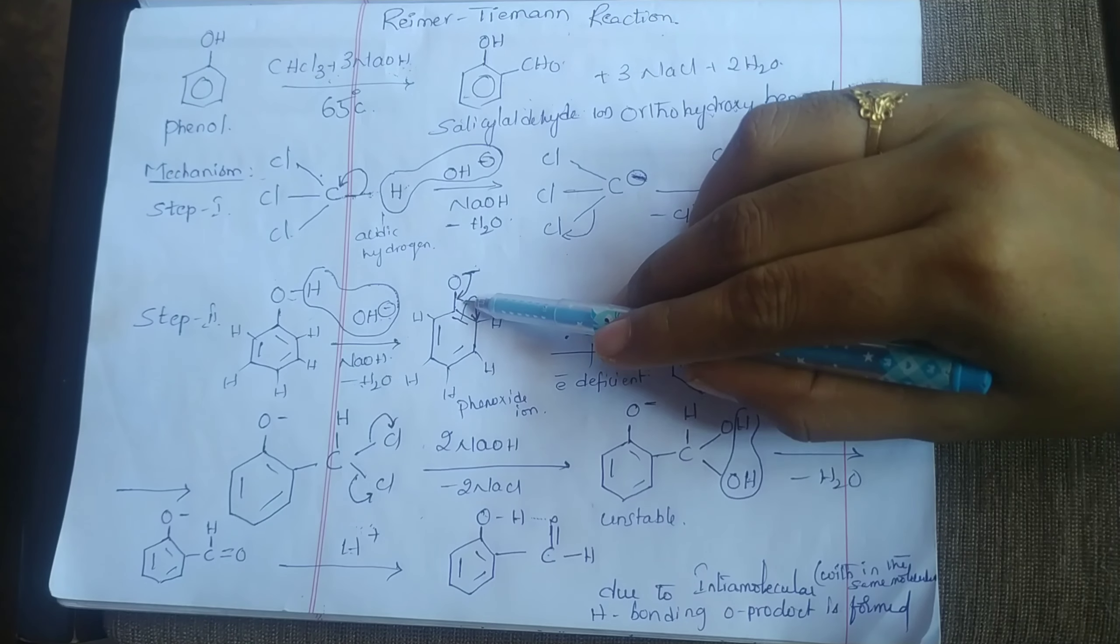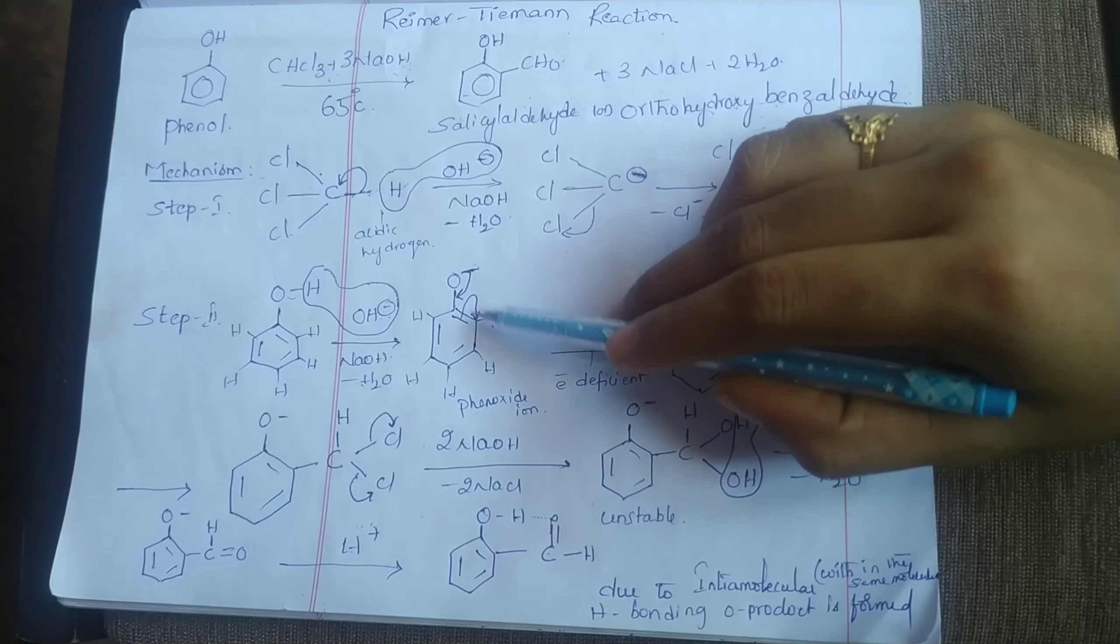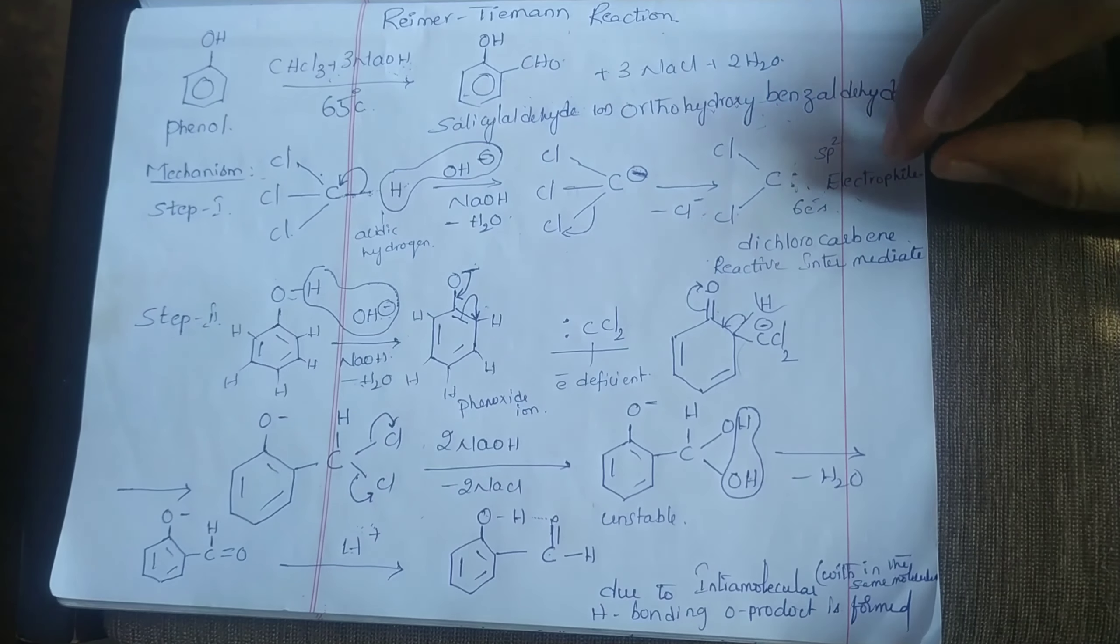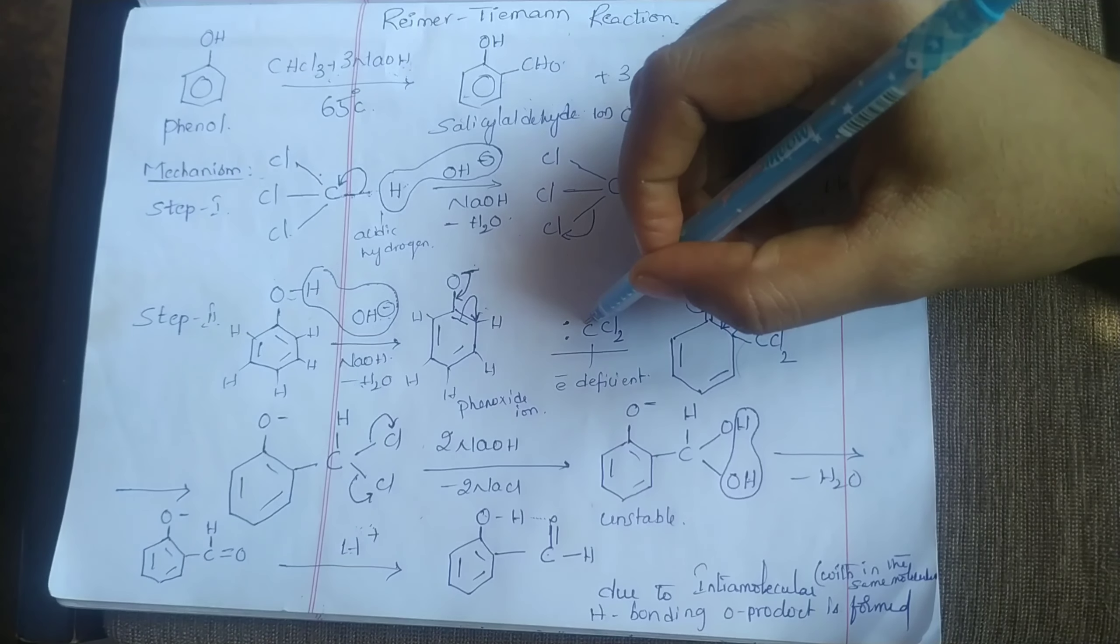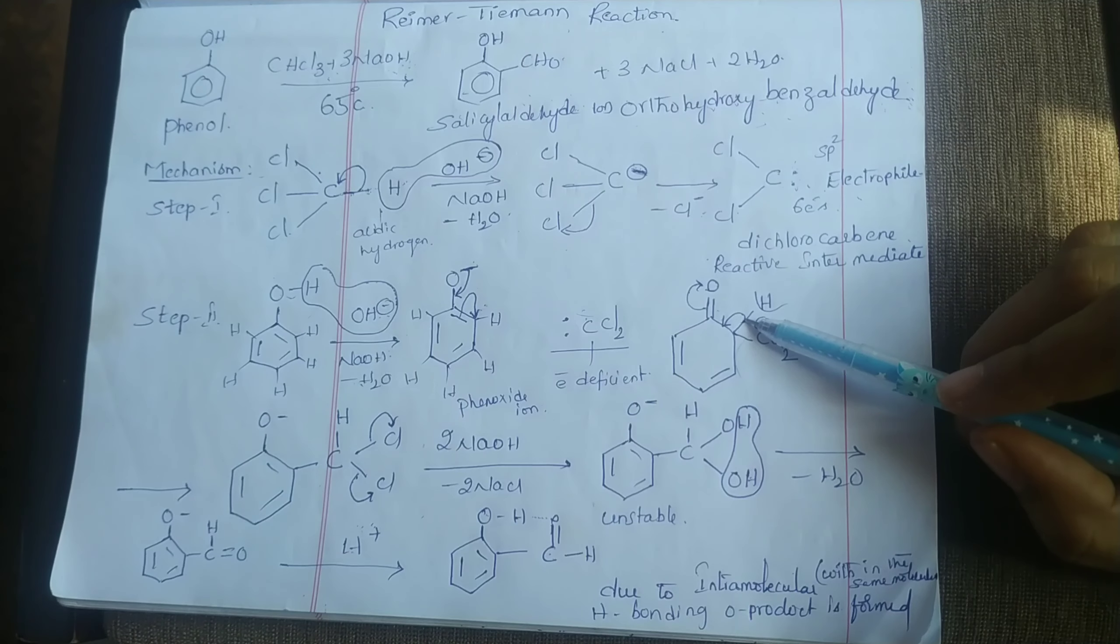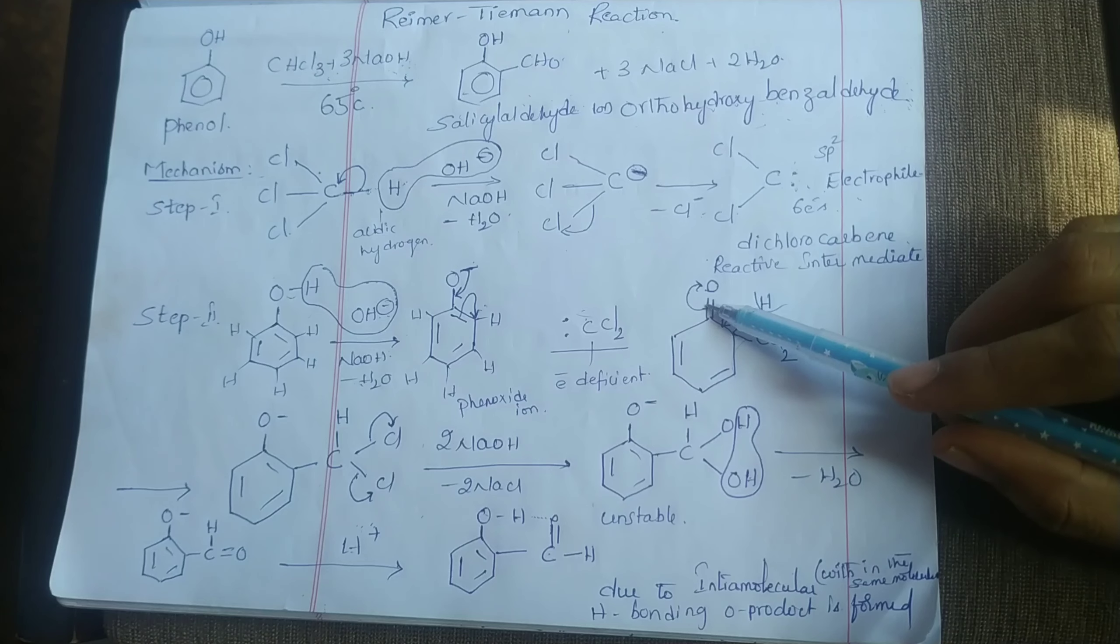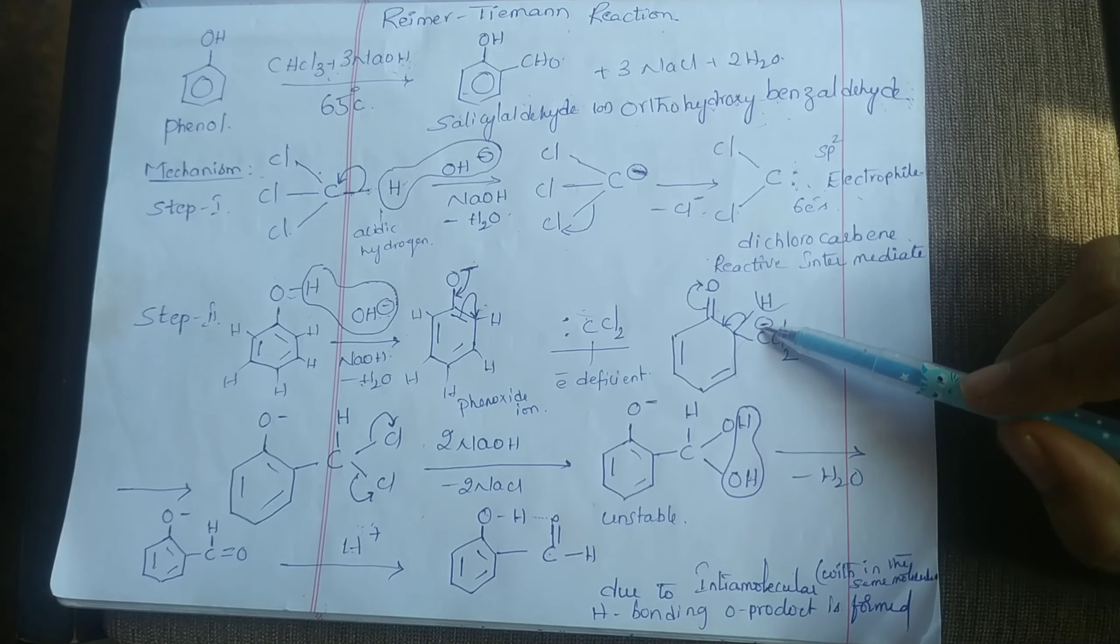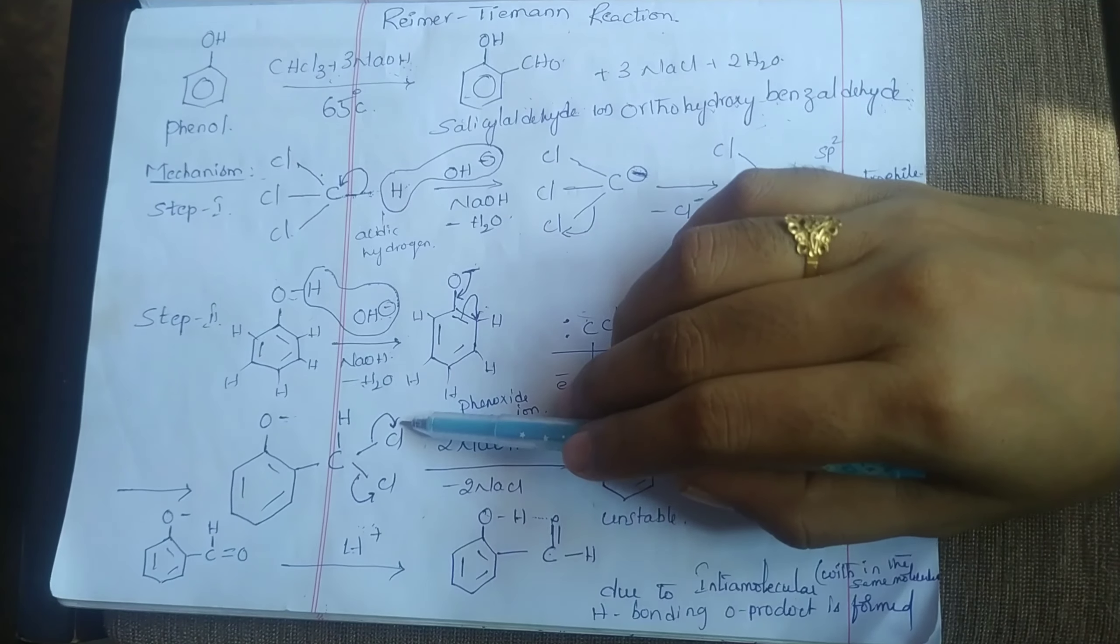Here, this negative charge shifts towards this side, and this bond shifts towards this carbon atom, so this carbon atom gets negative charge. Here our reactive intermediate, the electrophile, will attack. This bond shifts and these bonds shift towards oxygen, and this hydrogen will attack, so O minus is generated. These chlorine atoms are eliminated in the presence of two moles of NaOH along with the bonds.